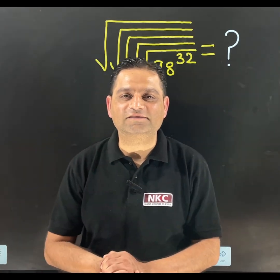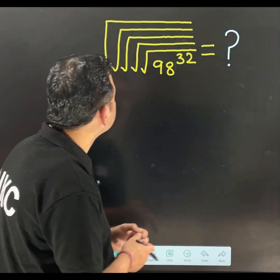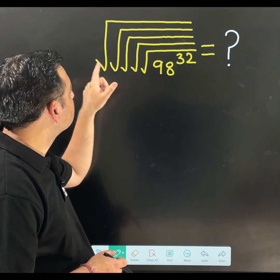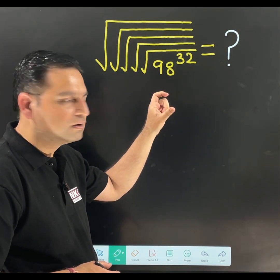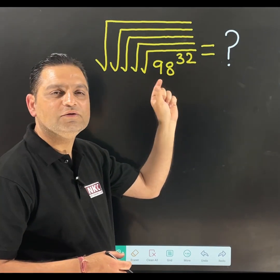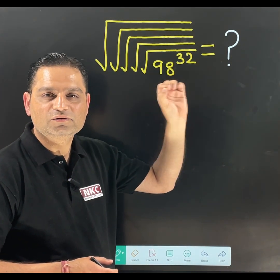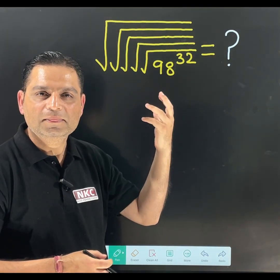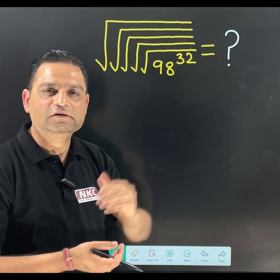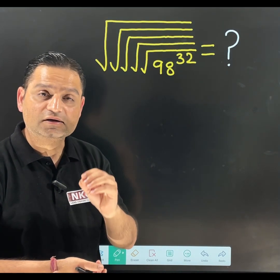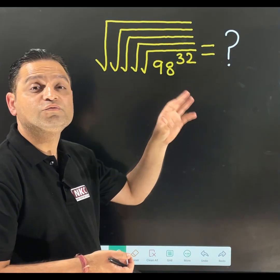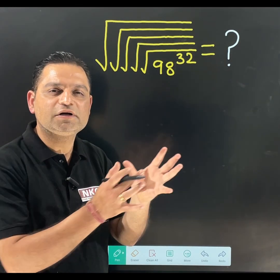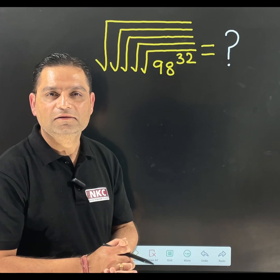Hello friends, welcome to Nankeshwar Classes. Today's lecture is going to be very interesting. Have a look at the question — there are multiple square roots and in between the value is 98 to the power 32. Looking at this question it seems to be very difficult and students sometimes face difficulties. But if the concept is clear, this question is very easy. Usually in competitive exams these types of questions come.